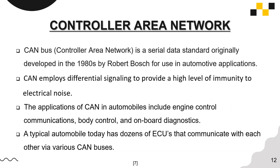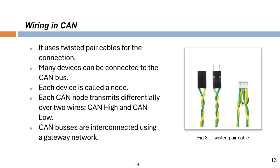There must be communication between these ECUs, and this is achieved through the Controller Area Network (CAN). A CAN bus is a serial data standard originally developed in the 1980s by Robert Bosch for use in automotive applications. It employs differential signaling to provide a high level of immunity to electrical noise. Applications of CAN in automobiles include engine control communication, body control, and on-board diagnostics. A typical automobile today has dozens of ECUs communicating through various CAN buses using twisted pair cables. Many devices, called nodes, such as sensors and actuators, can be connected to the CAN bus. Each node can transmit differentially over two wires: CAN high and CAN low, and these CAN buses are interconnected using a gateway network.